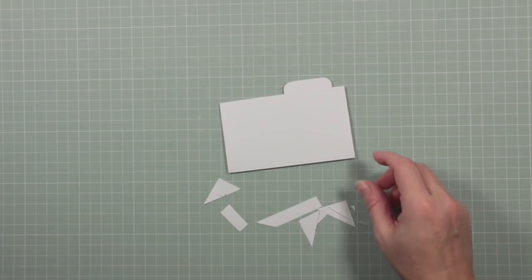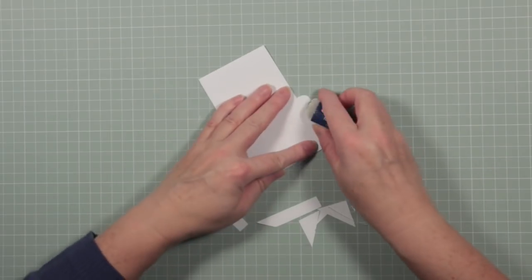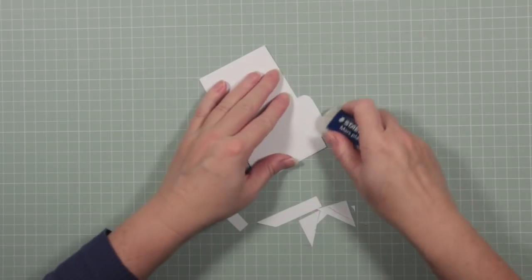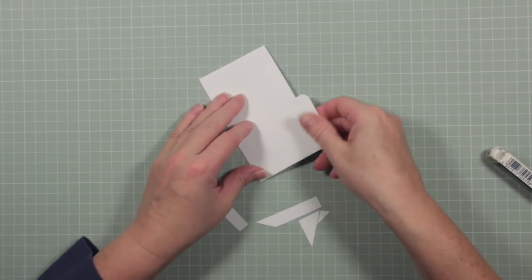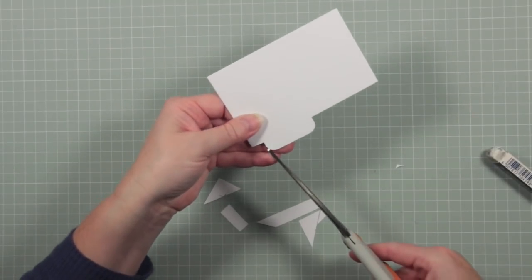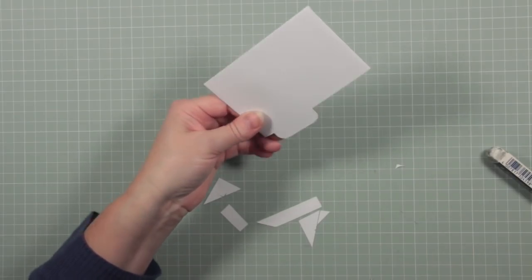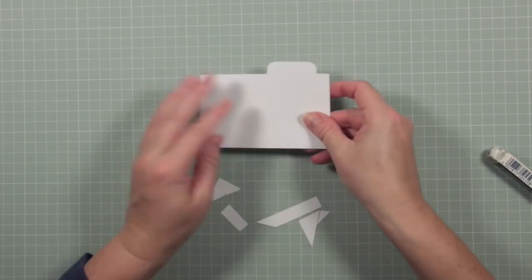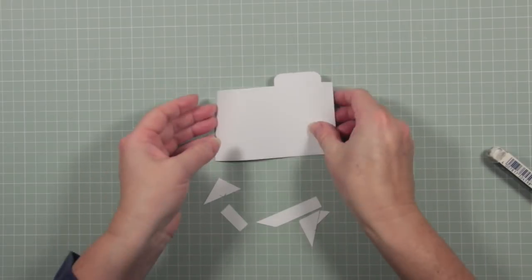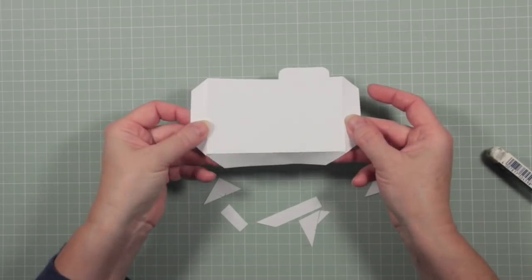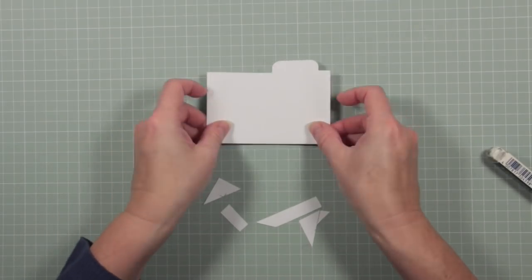Then I'll just take my rubber and remove those little pencil lines. So that's my pocket ready with my tab and I've got my edges, my little flaps, folded to the inside.